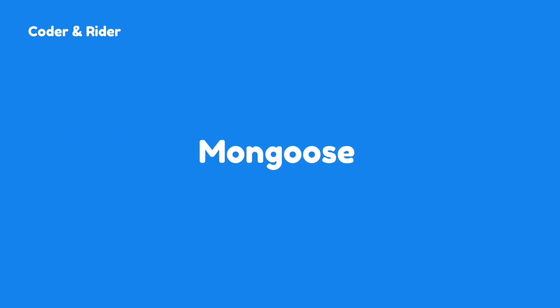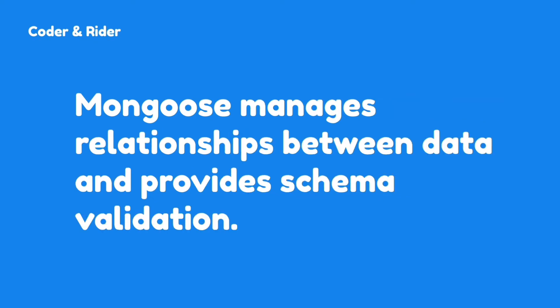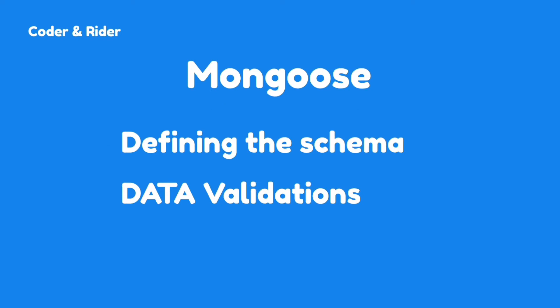Next, Mongoose. Mongoose is an object data modeling library for MongoDB and Node.js. Mongoose manages relationships between data and provides schema validation. In Mongoose, you need to learn defining the schema and data validations.